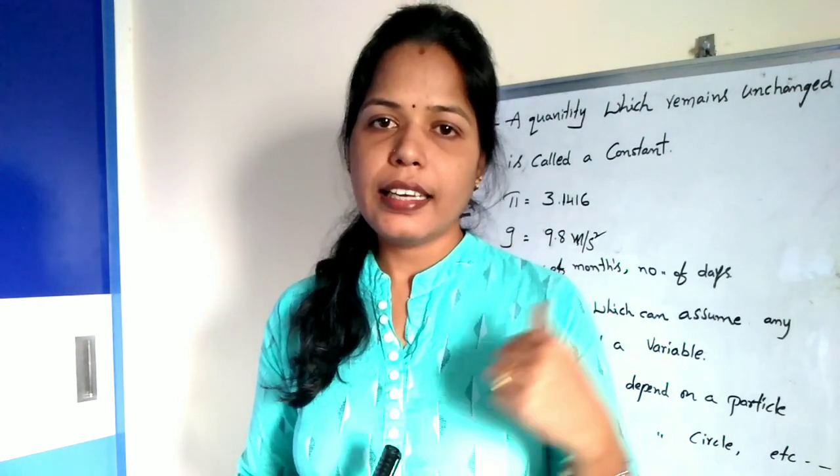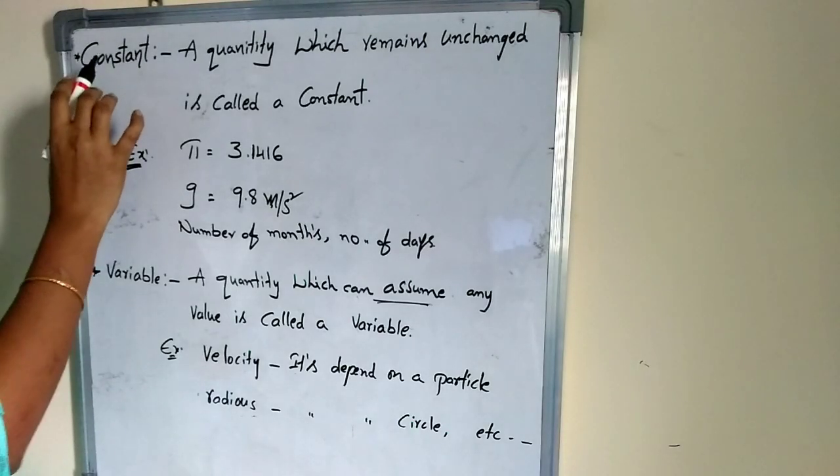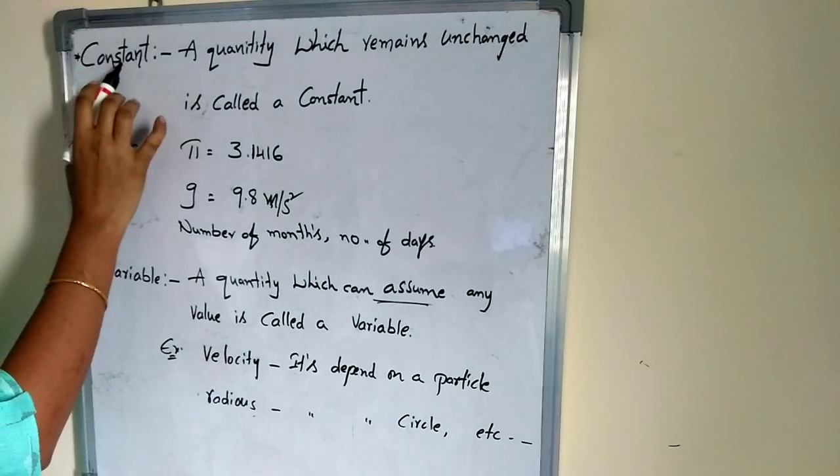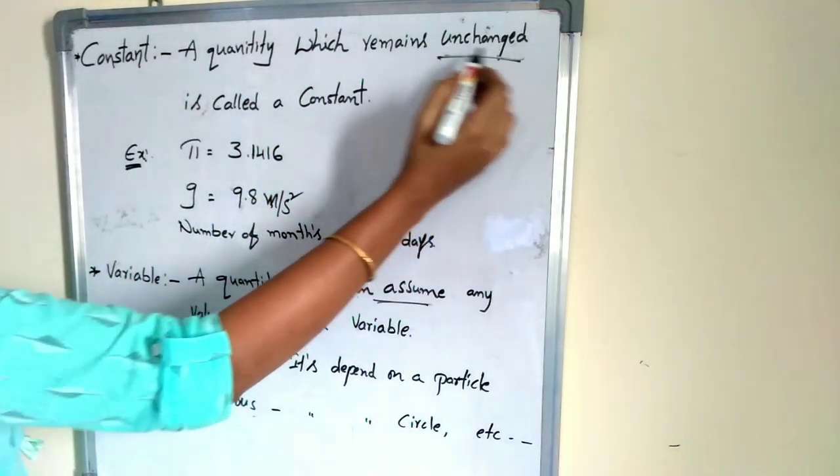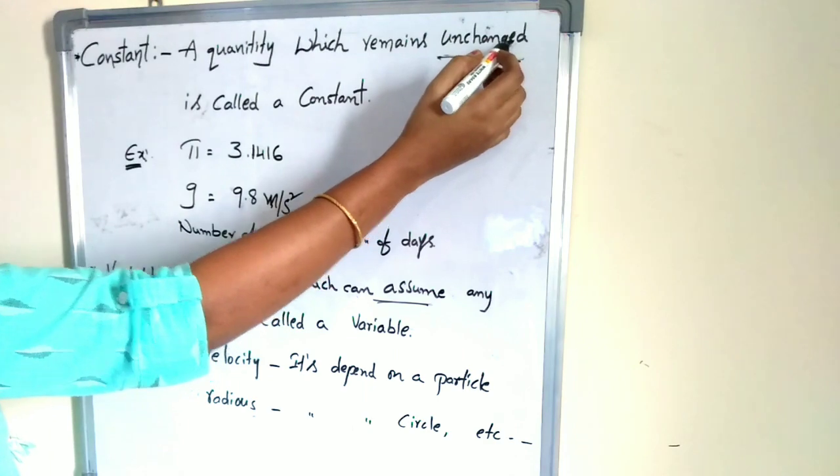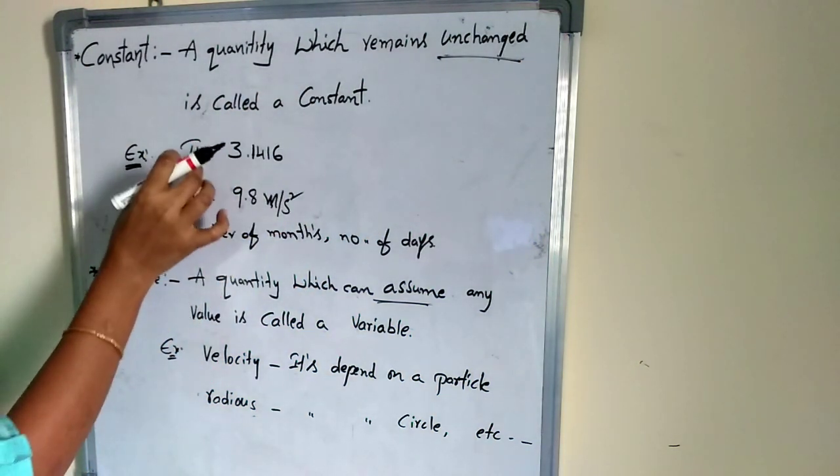By the theoretical definition I will clearly explain you. See here, the theoretical definition: what is a constant? A constant is a quantity which remains unchanged.